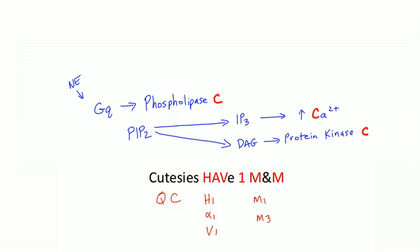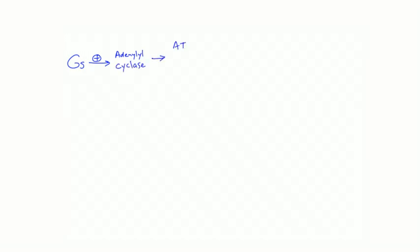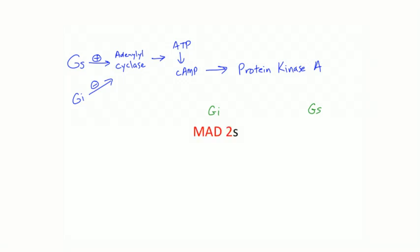The next G protein is Gs — S is for stimulates. Gs stimulates adenylyl cyclase, which converts ATP to cyclic AMP. Cyclic AMP then activates protein kinase A. Gi is the third type — I is for inhibit. Gi inhibits adenylyl cyclase, resulting in less cyclic AMP production and less activation of protein kinase A.